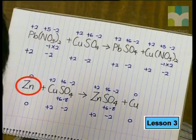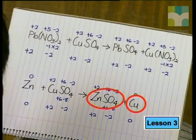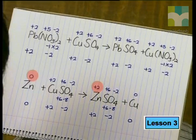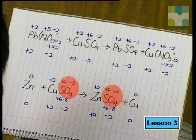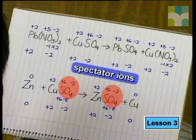In the second beaker, the reactants were zinc and copper sulfate, and the products consist of zinc 2 sulfate and copper. Notice that the oxidation number of zinc has changed from zero to plus two, while copper has changed from plus two to zero. The change in oxidation number indicates a change in the way electrons are arranged around the copper and zinc atoms. Therefore, this reaction is classified as a redox reaction. Notice the oxidation numbers of the atoms in the sulfate ion did not change — these ions took no part in the redox reaction and are called spectator ions.